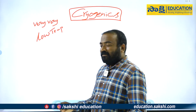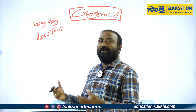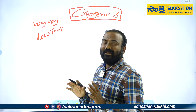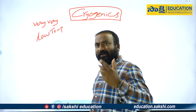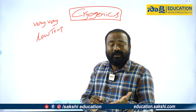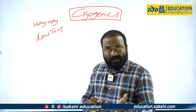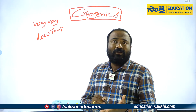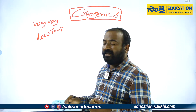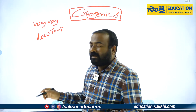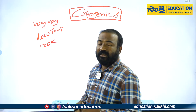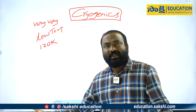Here we are going to talk about the topic of physics and the topic of heat. We are going to talk about temperature scales — Kelvin, Fahrenheit, and Celsius. We all know these scales. The topic here involves very low temperatures, and we will talk about temperatures below 120 Kelvin — these are cryogenic temperatures.